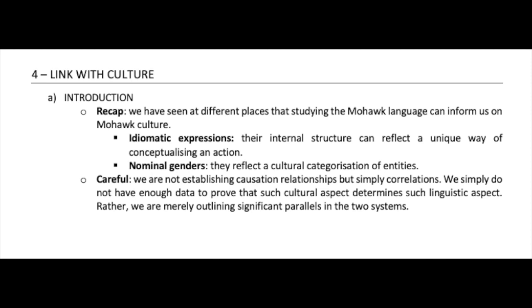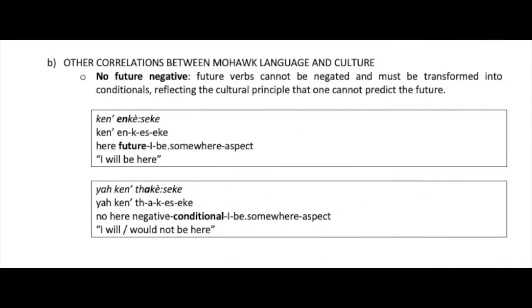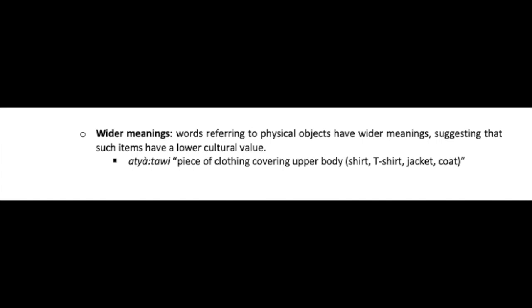First, future verbs cannot be negated and must be transformed into conditionals — this may reflect the cultural principle that one cannot predict the future. So 'when I will be here' with the future tense becomes 'I would not be here' with the conditional. Second, words referring to physical objects have wider meanings, suggesting such items have a lower cultural value — people in Mohawk culture place low emphasis on material objects. For example, one word can be translated as shirt, t-shirt, jacket, or coat, essentially meaning any upper-body covering.